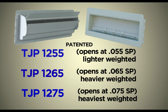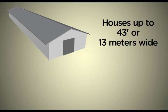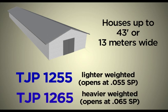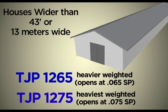You have 3 choices of TJP inlets: the TJP 1255 (lighter weighted), the TJP 1265 (heavier weighted), and the TJP 1275 (heaviest weighted). The heavier the rod, the greater the static pressure (SP) needed to pull TJP inlets open. In houses up to 43 feet or 13 meters wide, use a combination of TJP 1255 (lighter weighted) and TJP 1265 (heavier weighted). In houses wider than 43 feet or 13 meters, use a combination of TJP 1265 (heavier weighted) and TJP 1275 (heaviest weighted).